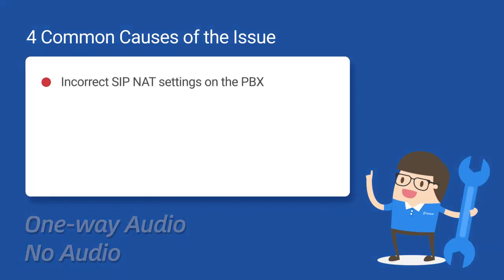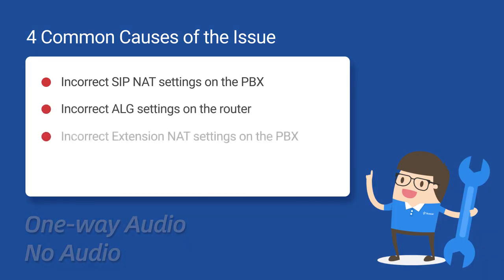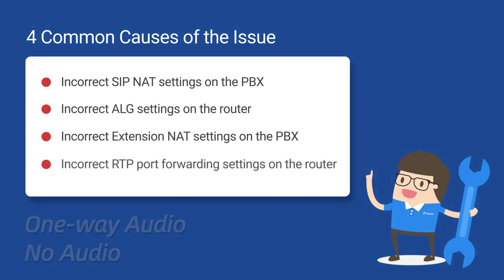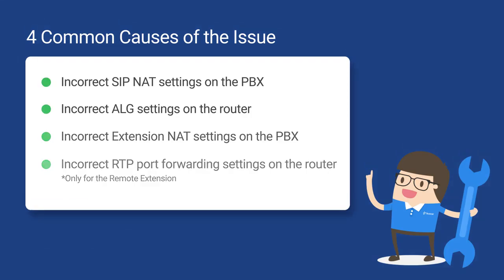Incorrect SIP NAT settings on the PBX. Incorrect ALG settings on the router. Incorrect extension NAT settings on the PBX. And incorrect RTP port forwarding settings on the router. Please note that the last two causes only apply to remote extensions, so we need to correct the corresponding settings.